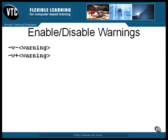You can get a list of these class names by using the help option on the command line. If you enable the special class named error, all warnings will be reported as errors, and the assembler will act as if an error occurred. You might want to check the list of warning classes because some of them are disabled by default, and you could be doing something where some of them become important for your particular application.